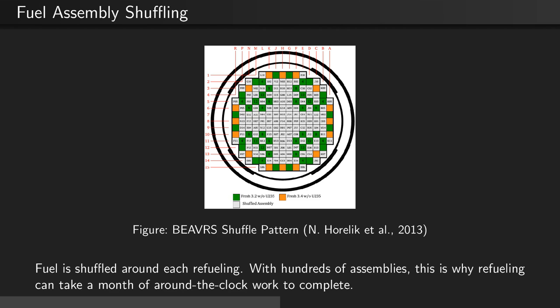Here we see an example fuel assembly shuffling pattern where the green and orange boxes represent new fresh fuel that goes in to replace what was permanently discharged. Fuel is shuffled around each refueling. With hundreds of assemblies, this is why a refueling process can take a month of around-the-clock work to complete.